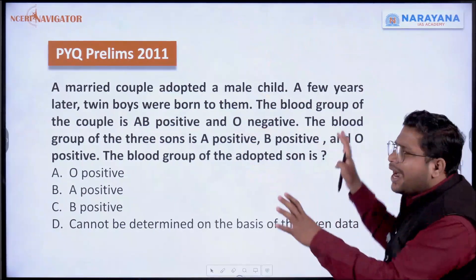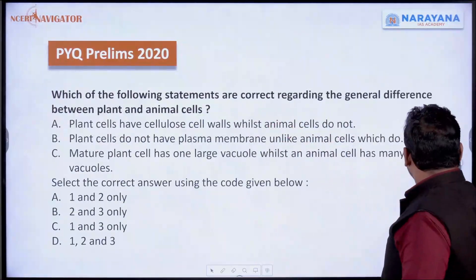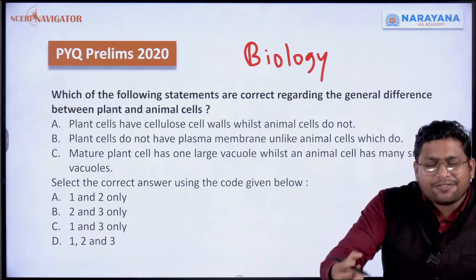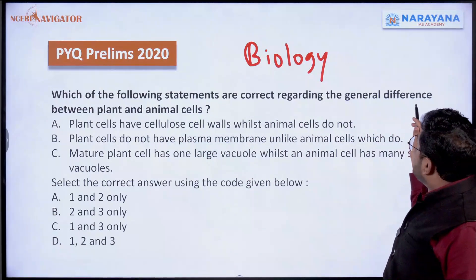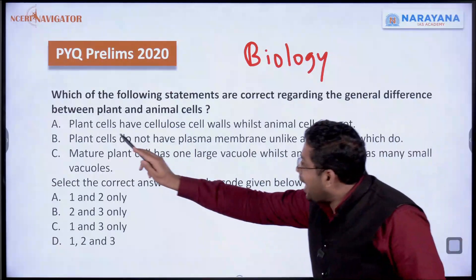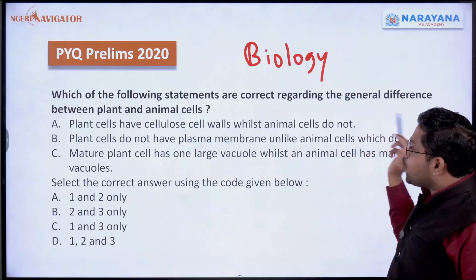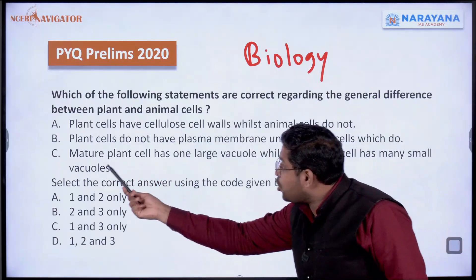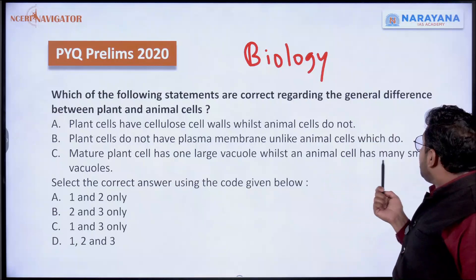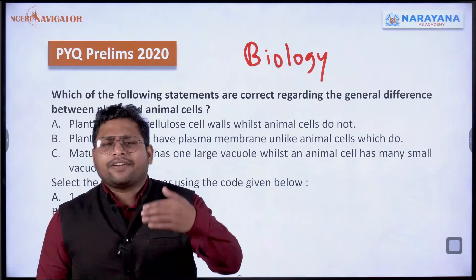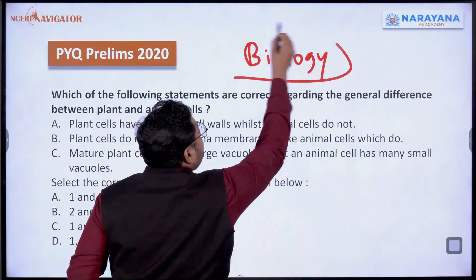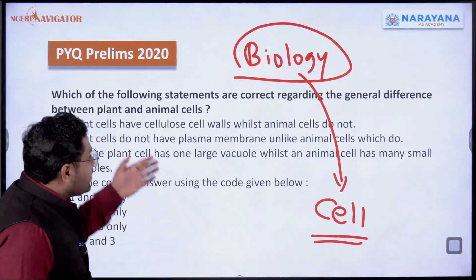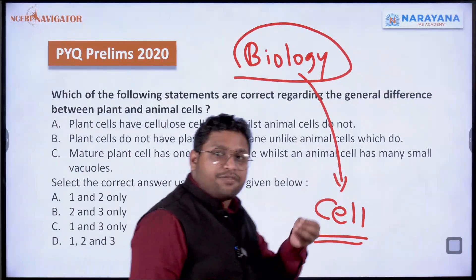Another question from core biology from 2020 prelims — a very simple question directly from the NCRT. Which of the following statements are correct regarding the general difference between plant and animal cells? Plant cells have cellulose cell walls while animal cells do not. Plant cells do not have plasma membrane unlike animal cells which do. Mature plant cells have one large vacuole while animal cells have many small vacuoles. We will deal with cell biology, and this question can be easily solved with basic knowledge of the cell.